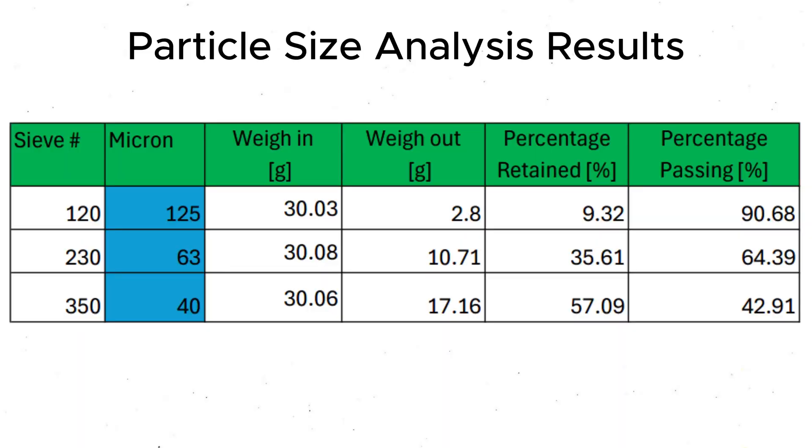In order to use the instrument, you have to at least know a rough estimate of the range your product will fall under to procure the correct sieves. These are the results from the test. There are many ways to format the output data depending on the standard you're following. In my case, I find it straightforward to use percentage retained and percentage passing. In this case, for example, I can calculate that about 9% of the sample is larger than 125 microns, and 91% is smaller than 125 microns.